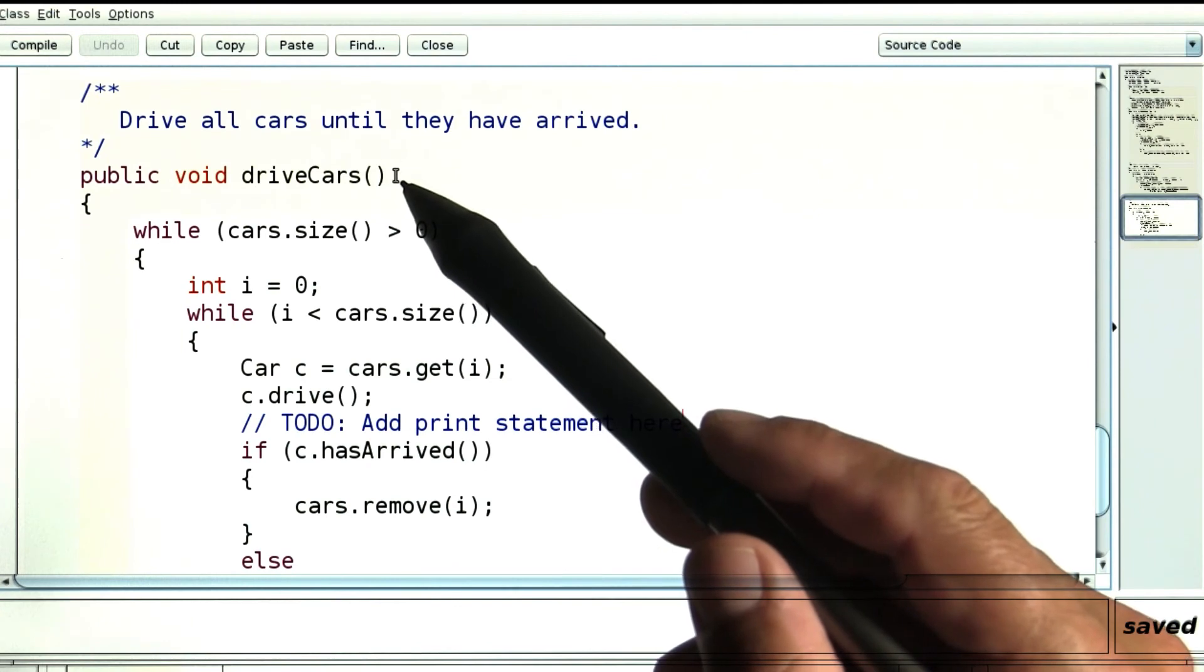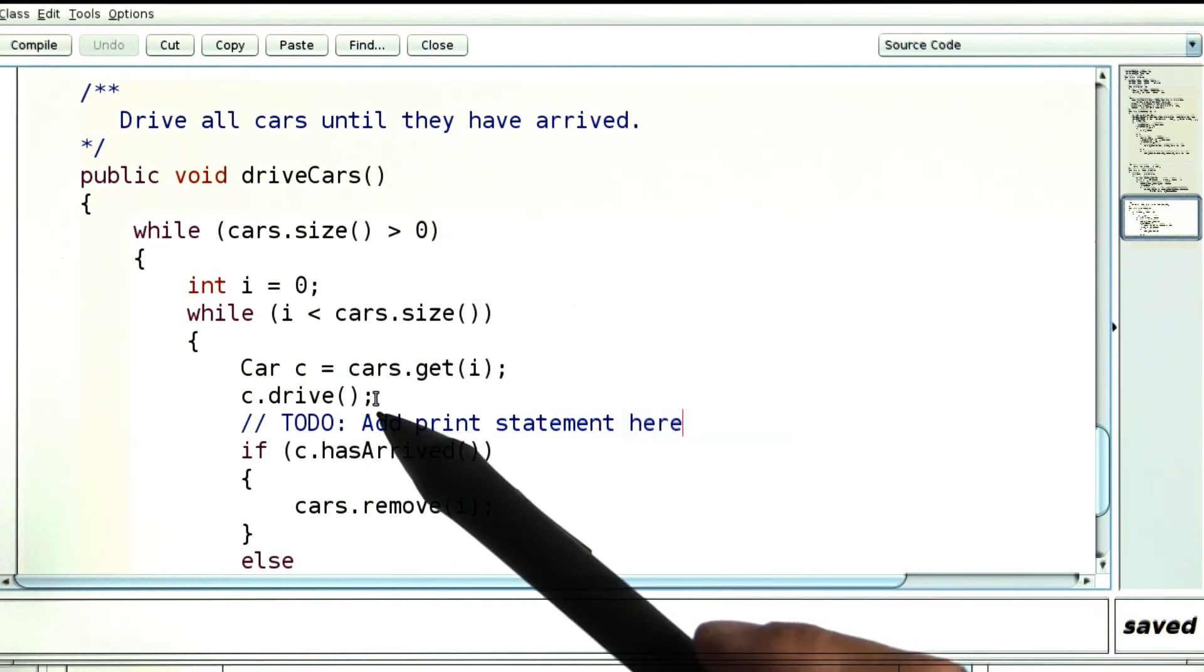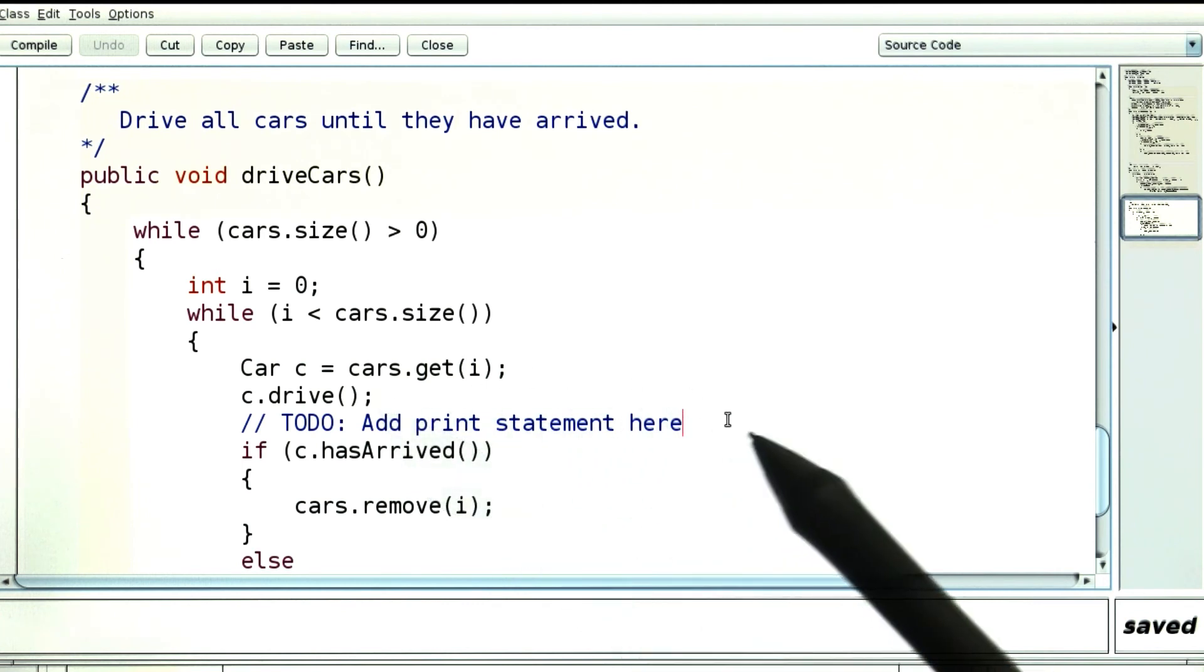In the driveCars method of the simulation class, look at where you call drive. Now that returns a value, namely an ArrayList of Person. Save that ArrayList in a variable, then make a loop over all of the people in that list, and for each of them, print the drop off message. Go ahead and implement that now.